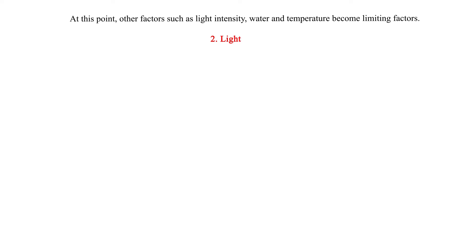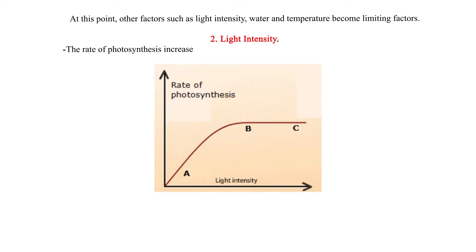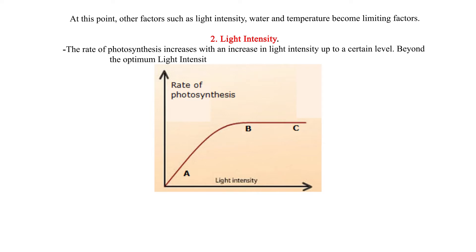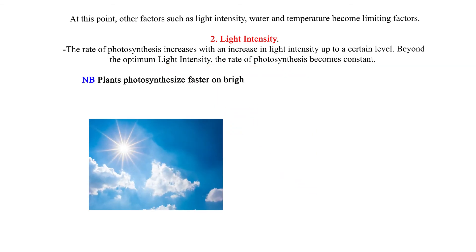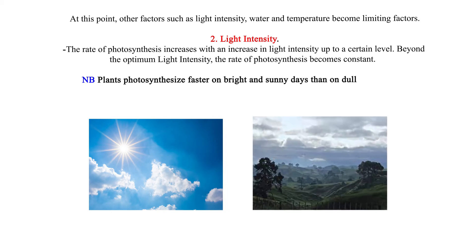2. Light intensity: The rate of photosynthesis increases with an increase in light intensity up to a certain level. Beyond the optimum light intensity, the rate of photosynthesis becomes constant. Note: Plants photosynthesize faster on bright and sunny days than on dull cloudy days.